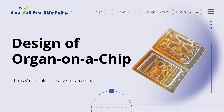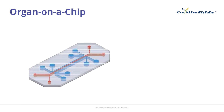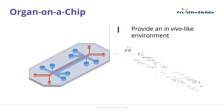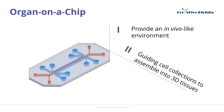Welcome to Creative BioLabs. Organ-on-a-chip, or OOC for short, aims to provide an appropriate in-vivo-like environment to guide the assembly of cell collections into 3D tissues capable of replicating one or more organ-level functions, or to culture organotypic tissues to retain function.